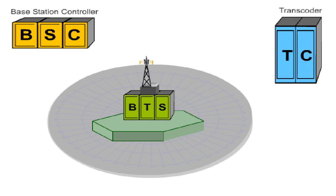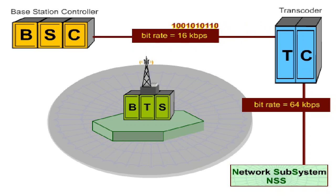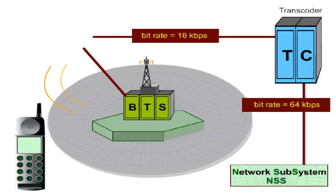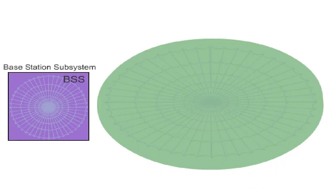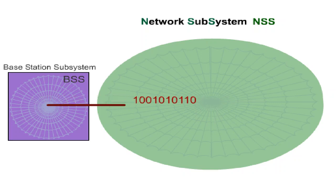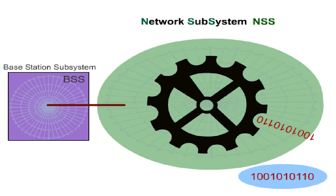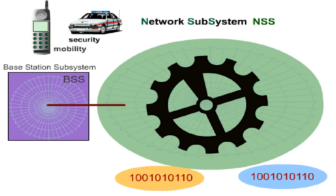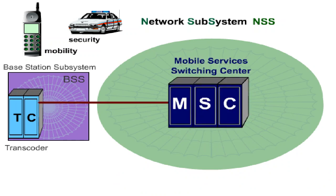The transcoder is the third element in the BSS and is needed to convert 64 kbps original speech into a 16 kbps signal of speech description parameters, to ensure a spectrum-efficient modulation on the air interface. BTS, BSC, and TC together form the base station subsystem, BSS. The base station subsystem forwards the signals to the network subsystem, NSS, where speech and circuit-switch data are controlled and forwarded to other networks if necessary. The NSS provides data relevant to security and mobility. The speech signals processed by the transcoder reach the mobile services switching centre, MSC, via the A interface.